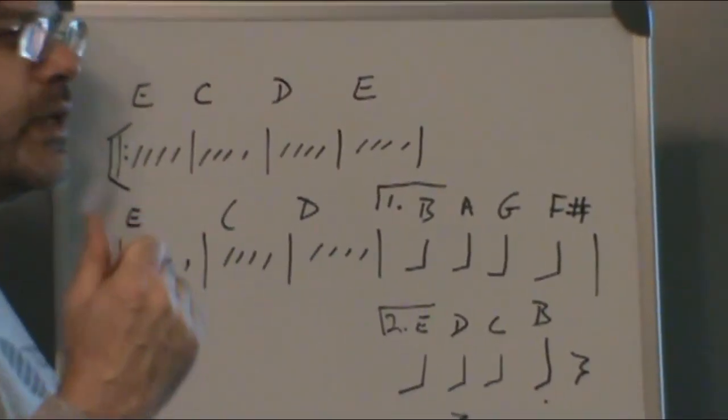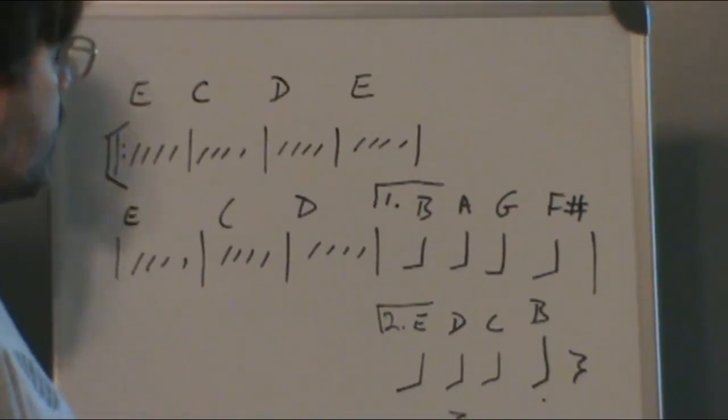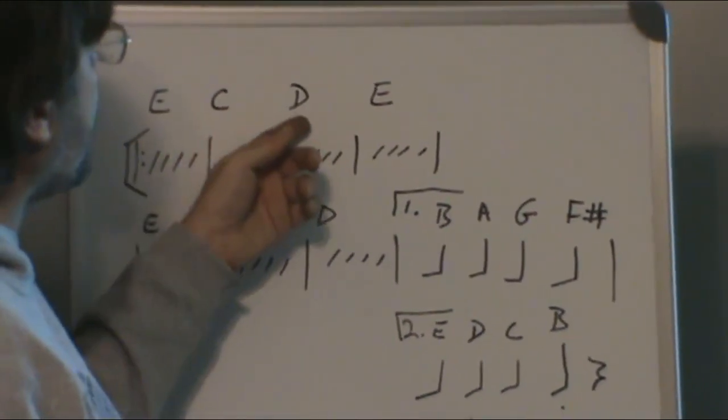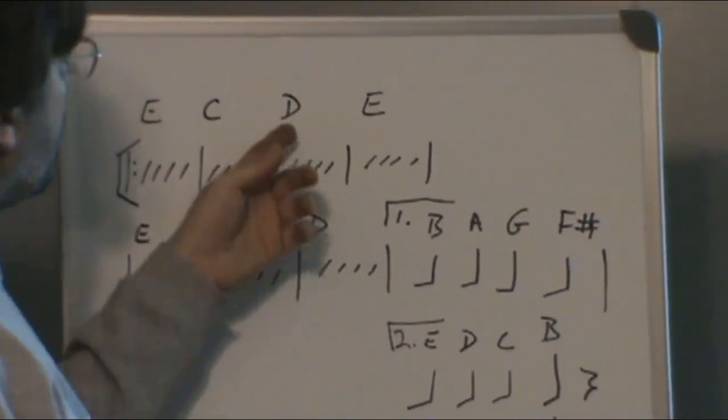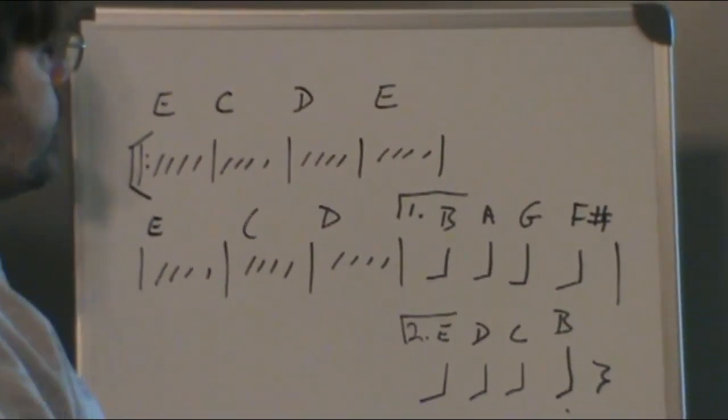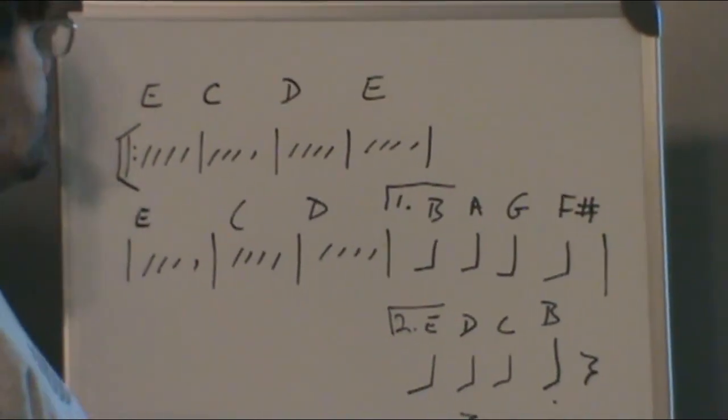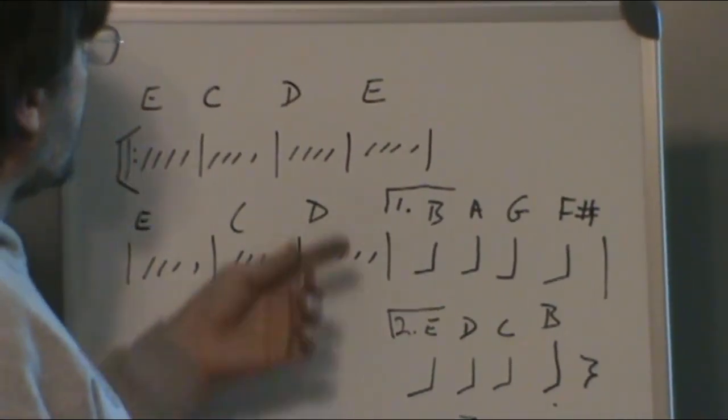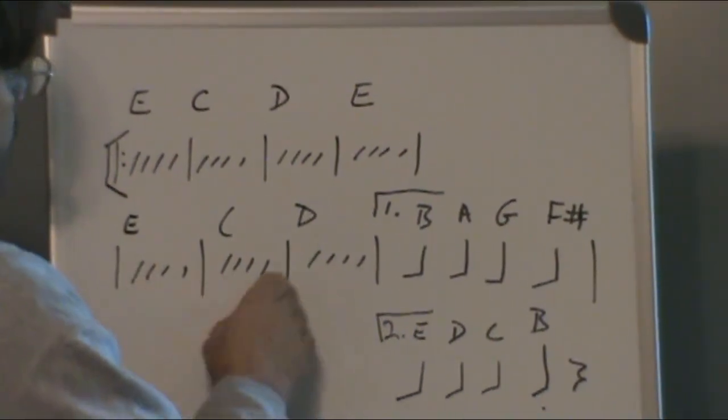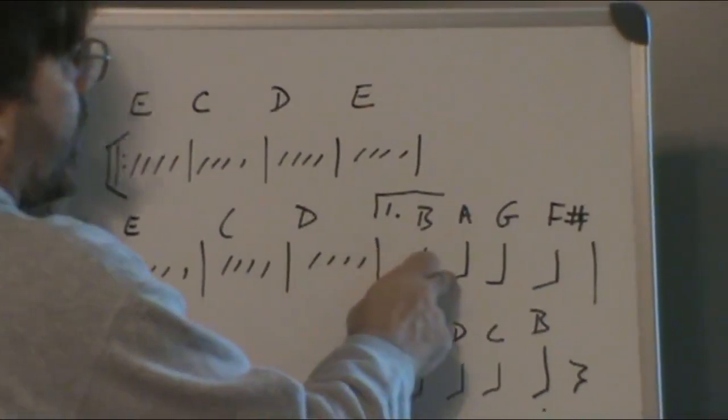He's doing another first inversion with your D. Basically all that means is you get the third in the bass instead of your root note, and then you come back to E. We cycle through that progression again, and then you have a tag.